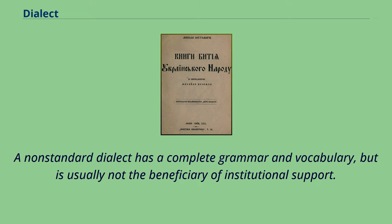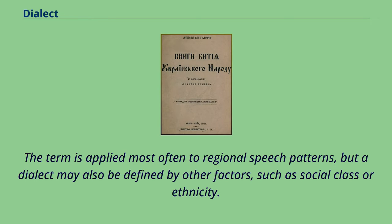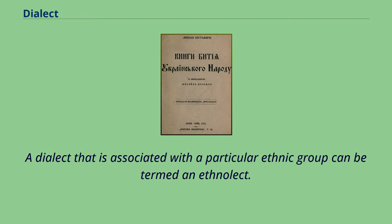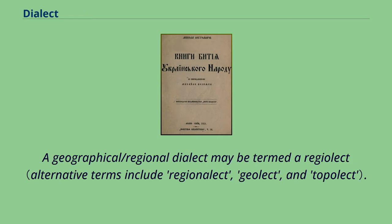A non-standard dialect has a complete grammar and vocabulary, but is usually not the beneficiary of institutional support. The term is applied most often to regional speech patterns, but a dialect may also be defined by other factors such as social class or ethnicity. A dialect associated with a particular social class can be termed a sociolect, one associated with an ethnic group an ethnolect, and a geographical or regional dialect may be termed a regiolect.